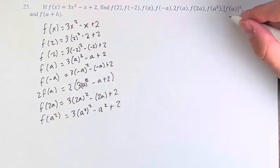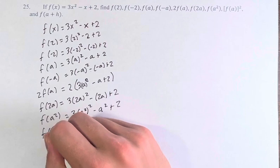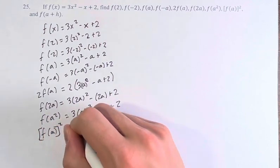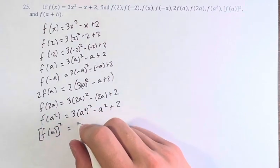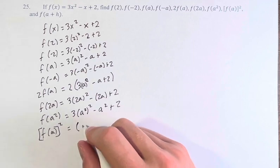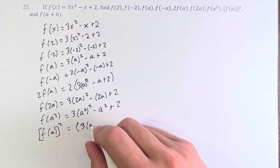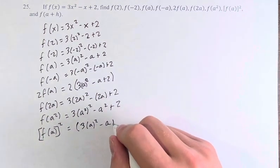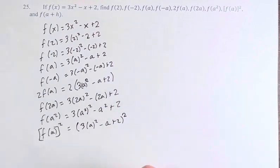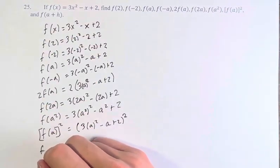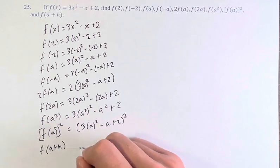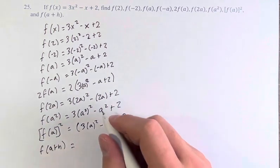f of a, altogether squared, is again a little bit different. f of a, 3a squared, minus a plus 2, and you square the whole thing. And finally, f of a plus h, plugging in a plus h.